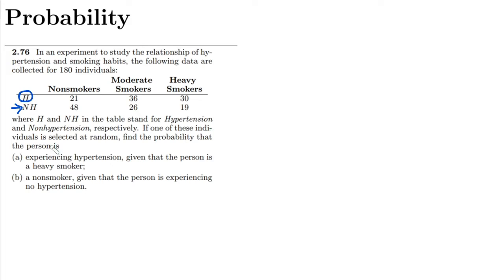If one of these individuals is selected at random, find the probability that the person is: A) experiencing hypertension given that the person is a heavy smoker. Let me solve it here.